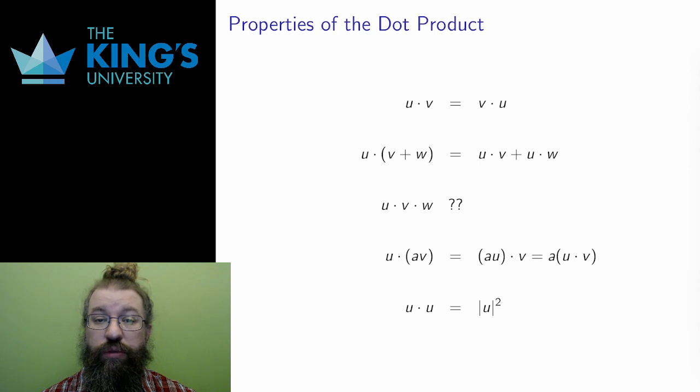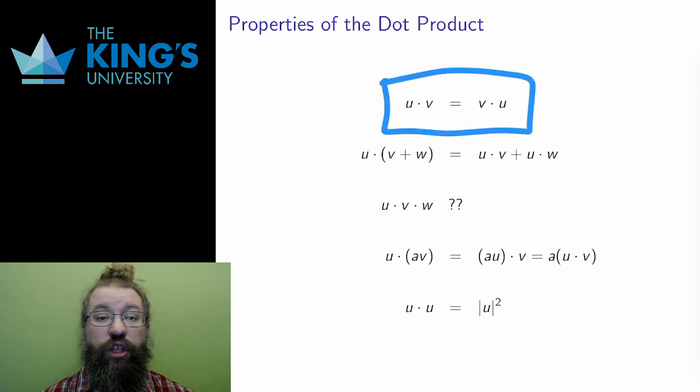First, the dot product is commutative. The order can be changed. u dot v is the same thing as v dot u. The proofs of these identities are being left to the activities for the week, so look for them there.